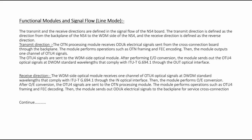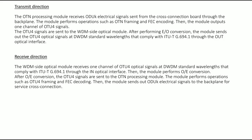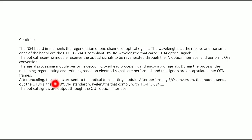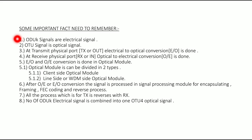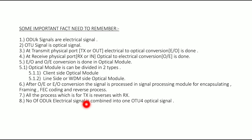Key points to remember: OTU K signals are electrical signals; OTU signals are optical signals. At the transmit physical port, electrical to optical conversion is done. At the receiver physical port (Rx/in), optical to electrical conversion is done. These conversions are done in the optical module, which can be divided into client side and line side optical modules. After conversion, the signal is processed in the signal processing module for encapsulation, framing, FEC encoding, decoding, and the reverse process. All TX processes are reversed for RX. Multiple electrical signals are combined into the OTU4 optical signal.